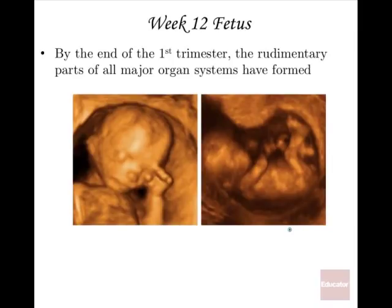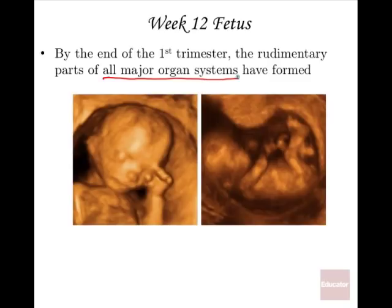By the week-12 fetus, at the end of the first trimester, the rudimentary parts of all major organ systems have formed. The heart is beating, the brain has function, there is a liver and there are lungs — but none of these are ready for the outside world. The earlier a baby is born prematurely, the less developed the organs are. With an ultrasound you can see a clearly human baby; ultrasound technology has improved greatly with good three-dimensional images available.